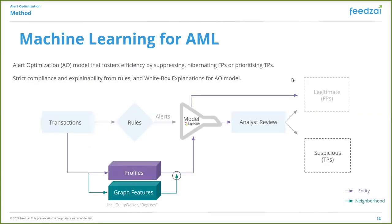So to recap, given transactional data, we calculate entity-based profiles and graph-based features, concatenate both, and train a LightGBM classifier that will assign a risk score per alert.